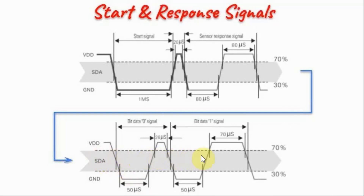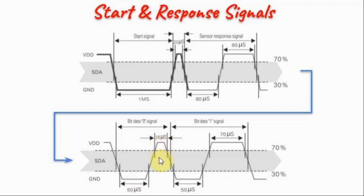Next, the sensor sends the 40-bit data where ones and zeros are encoded in the width of the high pulse. Preceding the high pulse, there is a low pulse of 50 microseconds, and then the high pulse. If the high pulse is 26 microseconds, this is a logic 0, and if the high pulse is 70 microseconds, it's a logic 1.